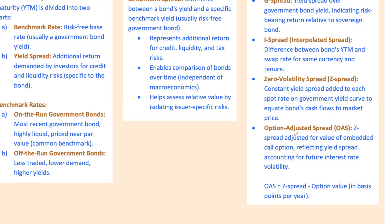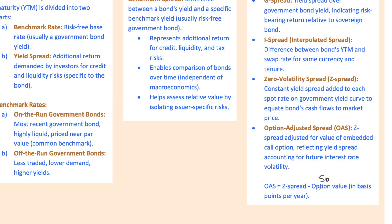When a bond has embedded options like a callable bond, that's where the option-adjusted spread, OAS, comes in. The OAS adjusts the Z spread by factoring in the value of the call option, reflecting yield spread accounting for future interest rate volatility. The formula is simple: OAS equals Z spread minus the value of the option. For example, if Technova's callable bond has a Z spread of 250 basis points but the option is valued at 50 basis points, the OAS would be 200 basis points — what you're actually getting after considering call risk.